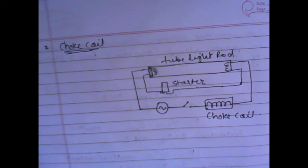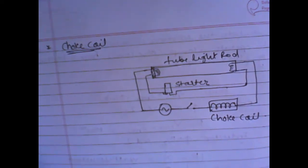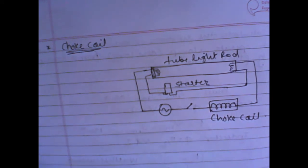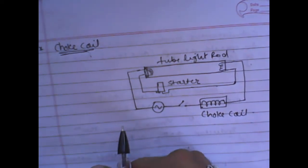Let us learn about choke coil. In a DC circuit, current is reduced with the help of a resistor.